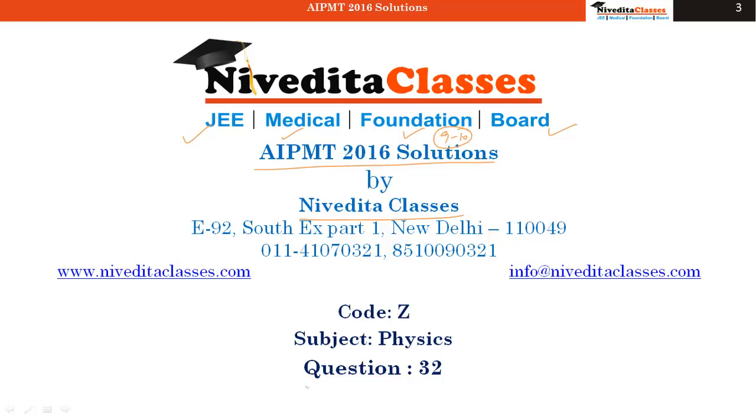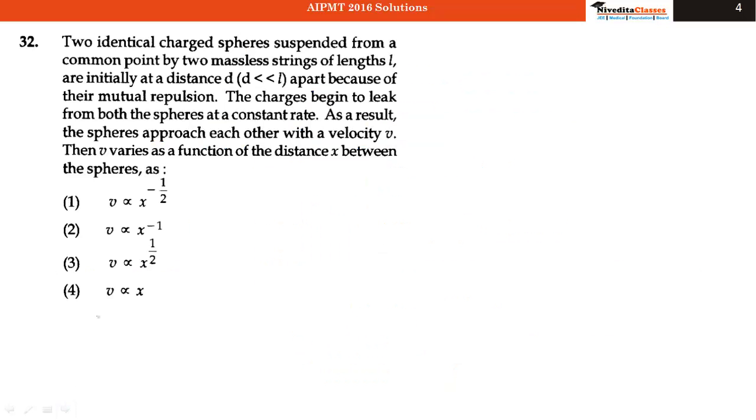Now we will discuss question 32 from subject physics of code Z. The question says that two identical charged spheres suspended from a common point by two massless strings of length L are initially at a distance D, where D is very small compared to the length of the string, apart because of their mutual repulsion.